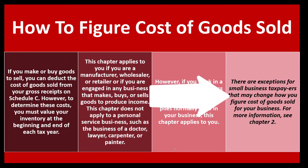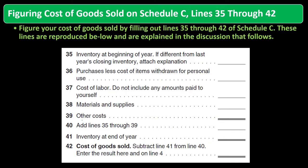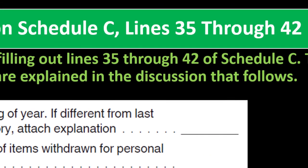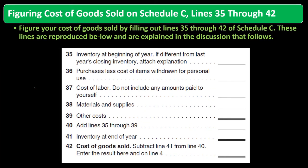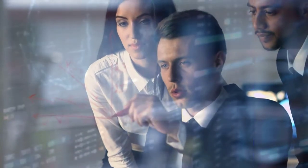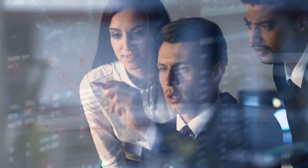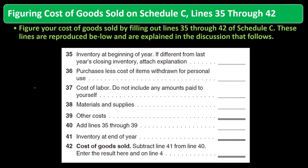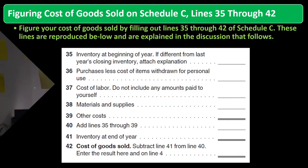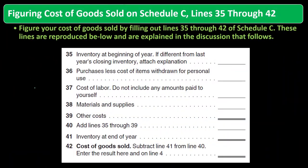There are exceptions for small business taxpayers that may change how you figure cost of goods sold. Figure cost of goods sold on Schedule C, Lines 35 through 42, by filling out those lines on Schedule C — that's basically page two. If you have cost of goods sold on page one of Schedule C and you're getting it from accounting software, you might just have that number without the supporting periodic inventory calculation.